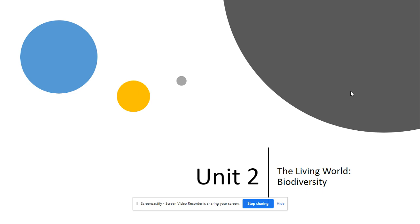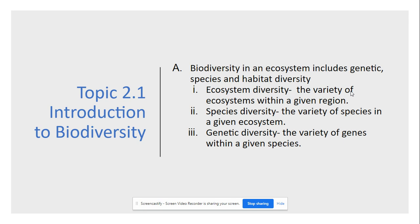The first topic is Introduction to Biodiversity. This is broken down into three levels: genetic, species, and ecosystem or habitat diversity. Ecosystem diversity is defined simply by the variety of ecosystems found in a given region — different types of habitats found in a similar biome based upon latitude, temperature, and precipitation. Species diversity tells us that a variety of different types of species may be found in a given ecosystem.